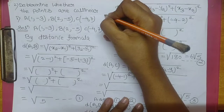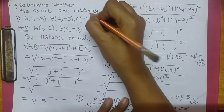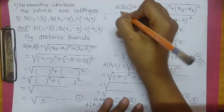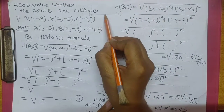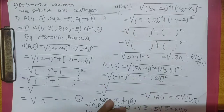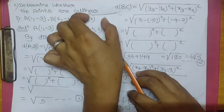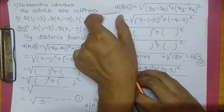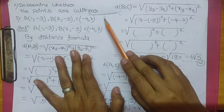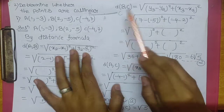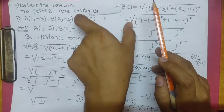You will check point A, point B and point C. Is it collinear? Matlab, ye sabhi same line mein hai ya nahi? Aap distance AB find karoge aur distance AC find karoge. Then, agar distance AB plus distance AC karne pe distance BC aa gaya, to ye collinear hoga.